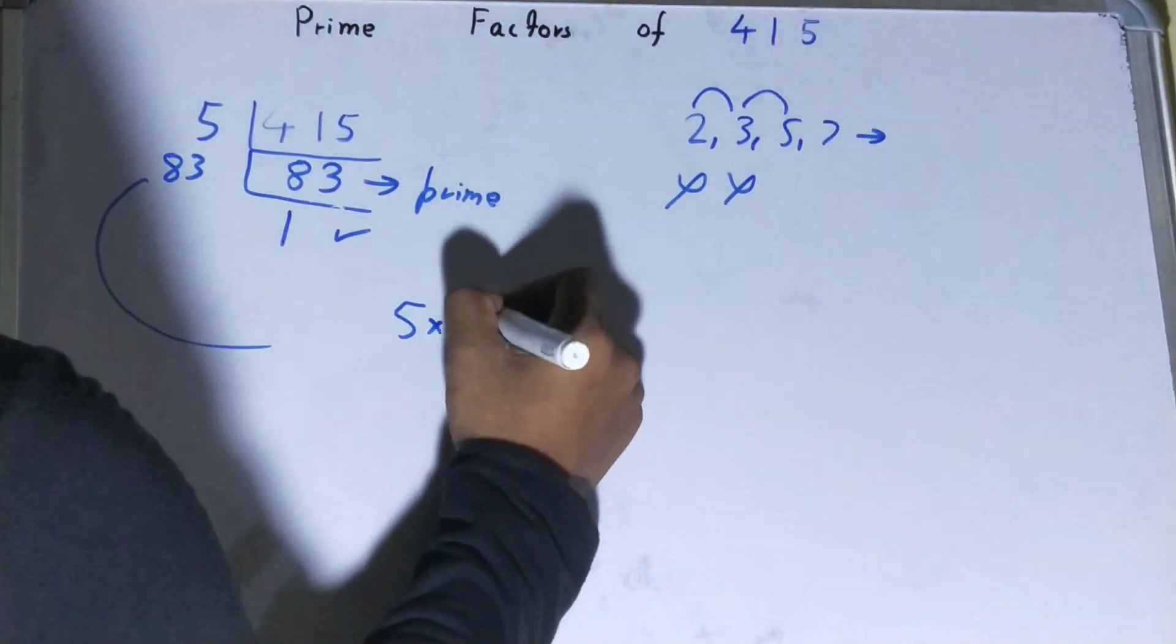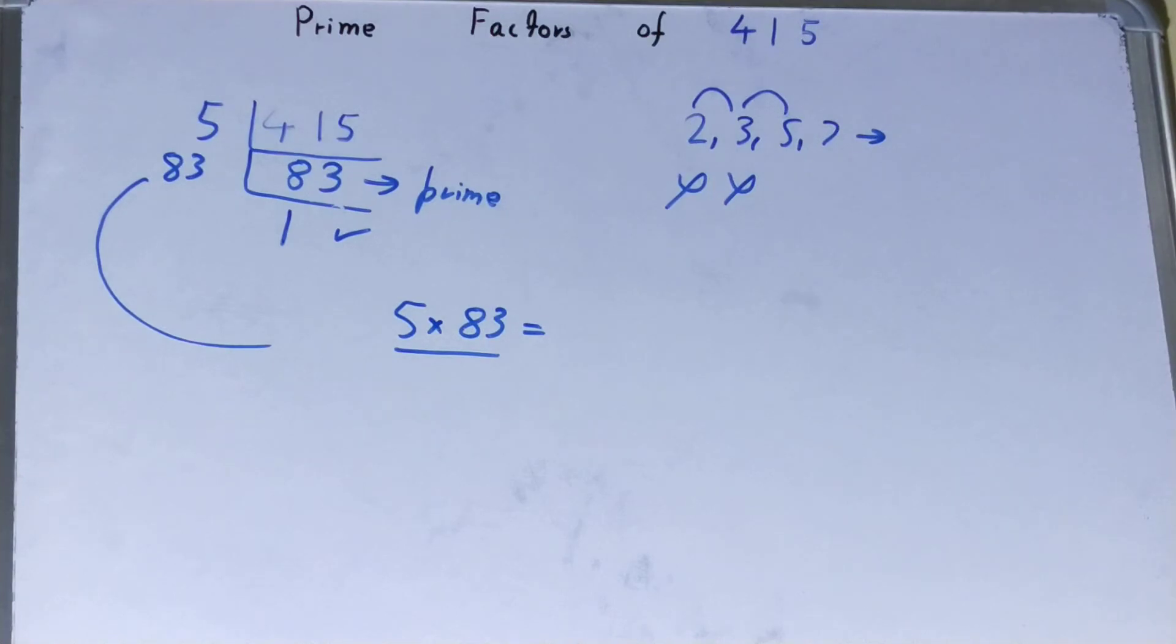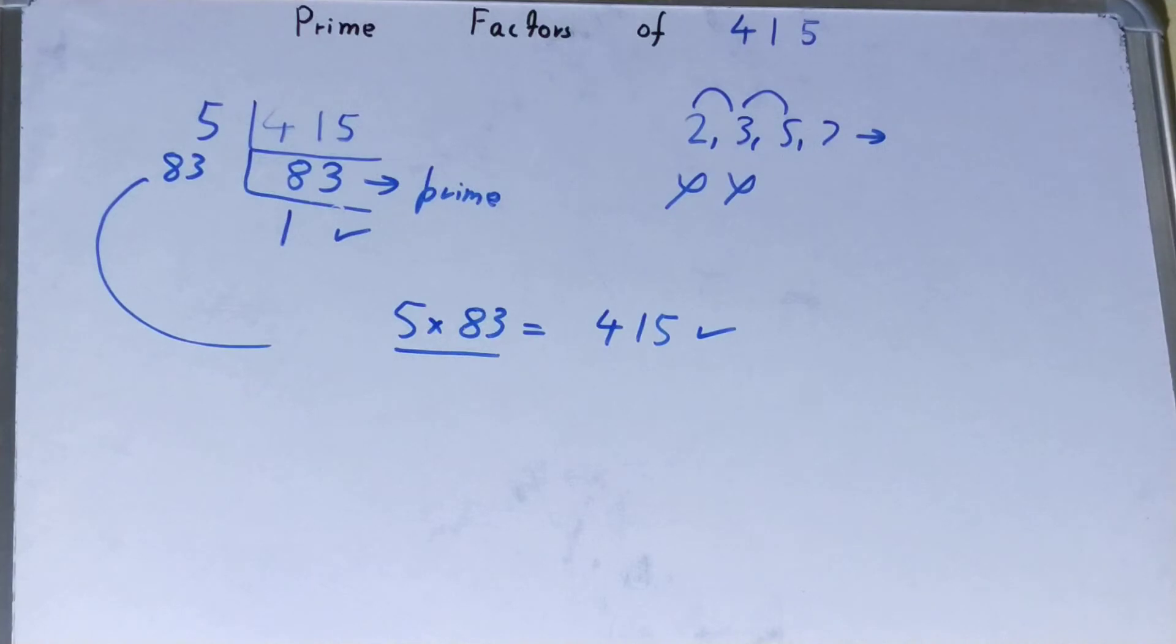If you want to check whether it is right or not, you can multiply them, and if on multiplying you have the number back again, that means your calculation is correct. If not, you need to recheck.